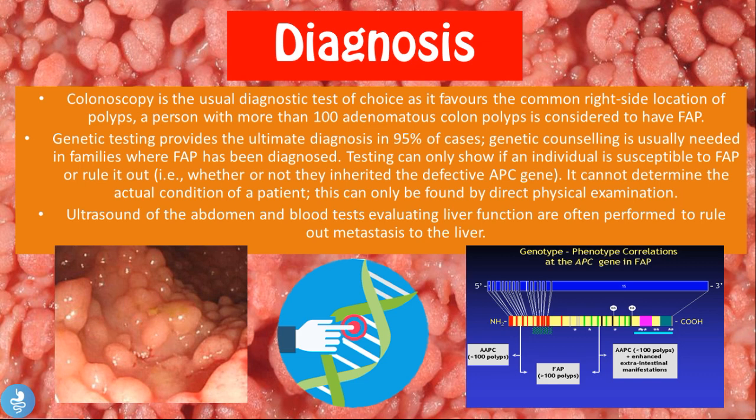Welcome back to the video on familial adenomatous polyposis. In this video we will continue with the diagnosis, complications, and treatment of the disease. Colonoscopy is the usual diagnostic test of choice, as it favors the common right side location of polyps. A person with more than 100 adenomatous colon polyps is considered to have FAP.